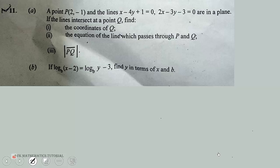Welcome to question number 11 on coordinate geometry. We solved questions 1 through 10 in the previous video. This is Waec 2023 Core Mathematics Novdek paper 2. This question says: a point P(2, -1) and the lines x minus 4y plus 1 equals 0 and 2x minus 3y minus 3 equals 0 are in a plane. If the lines intersect at point Q, find the coordinates of Q.